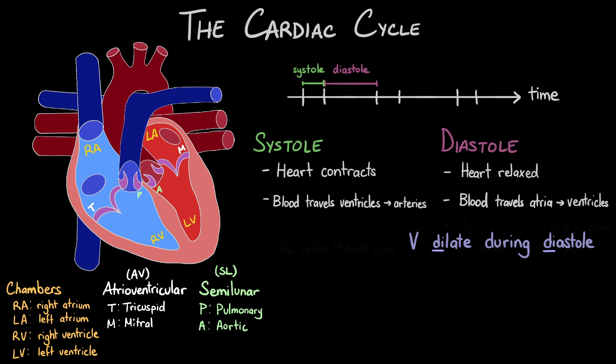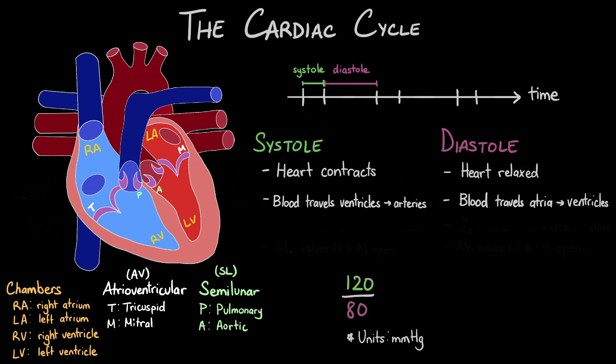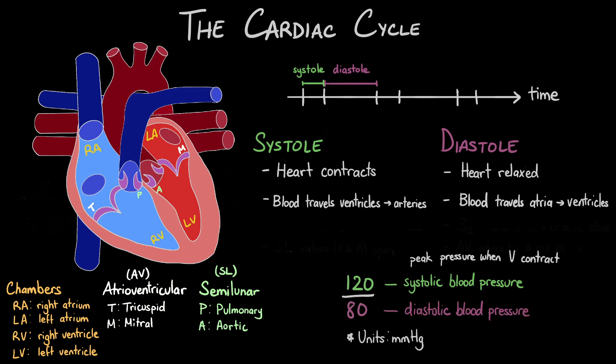When you get your blood pressure taken, you're given two numbers like 120 over 80. The top number is a measure of your systolic blood pressure, which is your peak blood pressure in your arteries when your ventricles contract. The bottom number is a measure of your diastolic blood pressure, which is the lowest pressure in your arteries when your ventricles are relaxed.